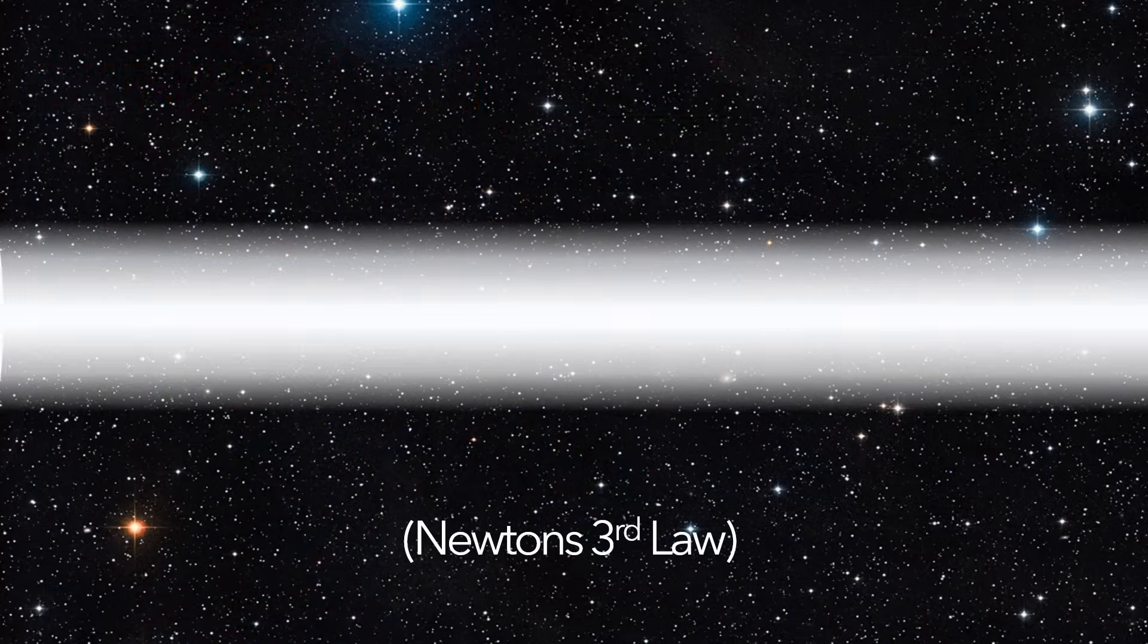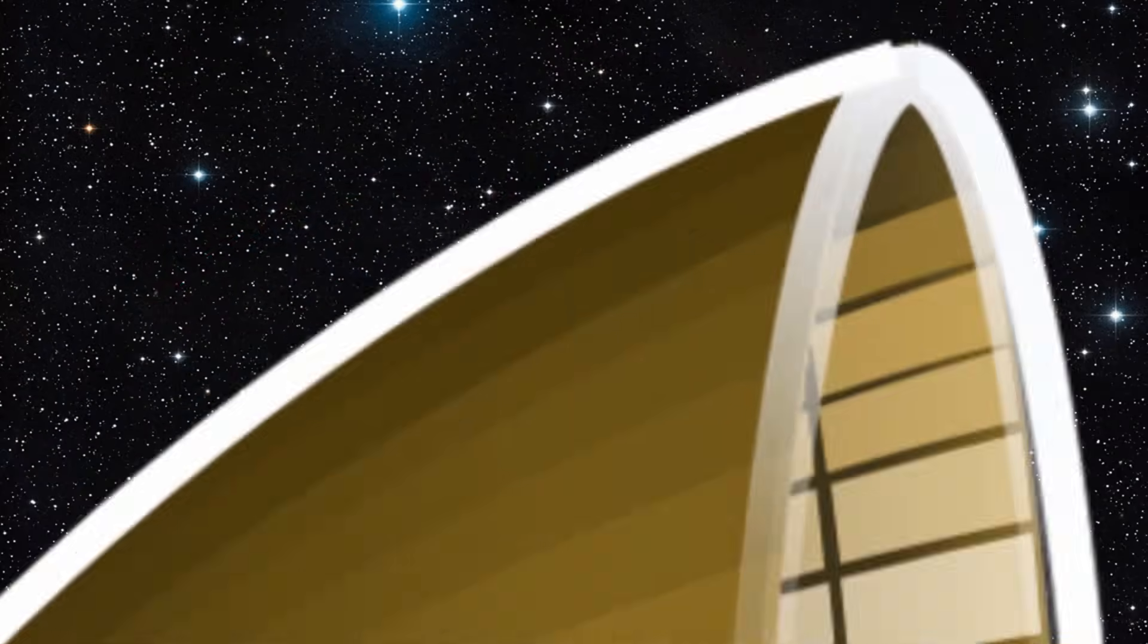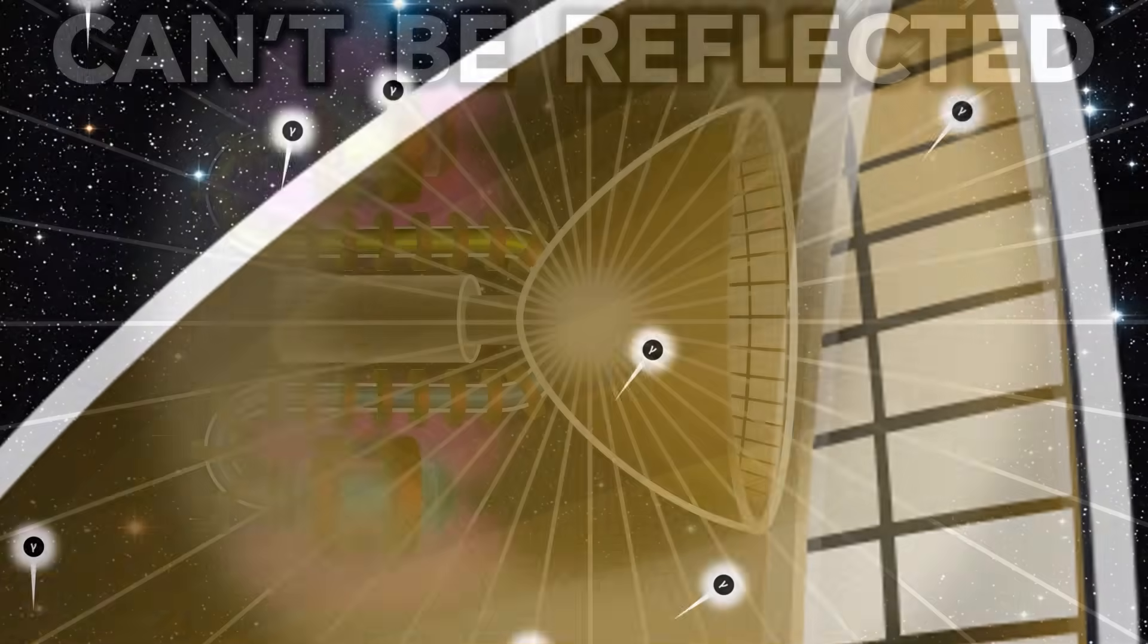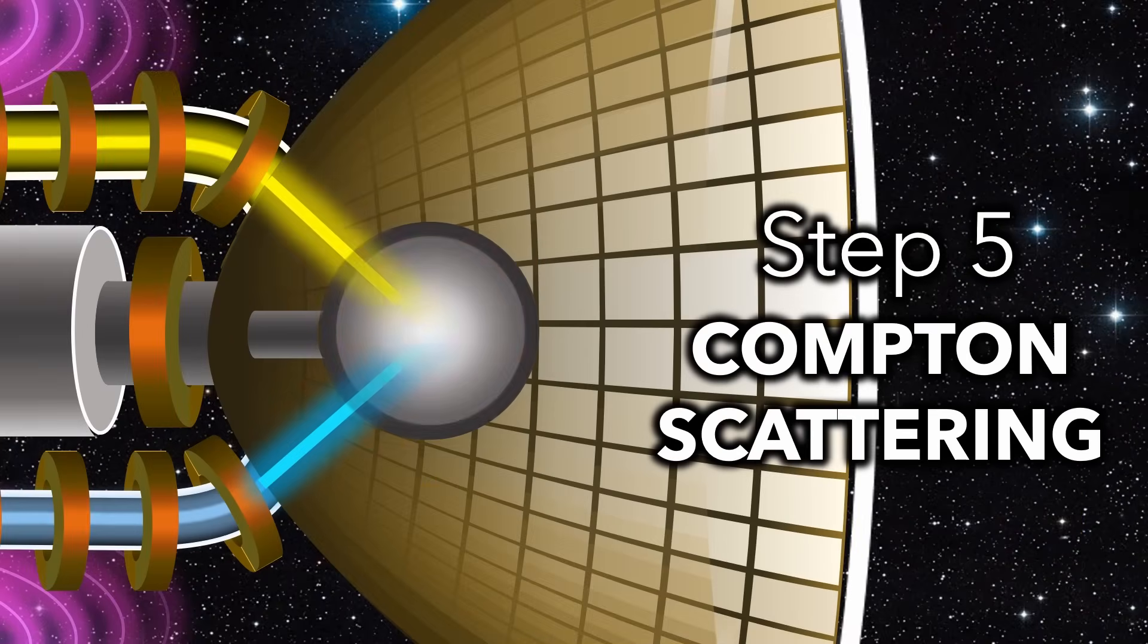However, there is one big issue. Gamma rays are so small that they pass through all known materials and can't be reflected by our sail. To reflect, they must be at least 41 times bigger. And this takes us to step 5.